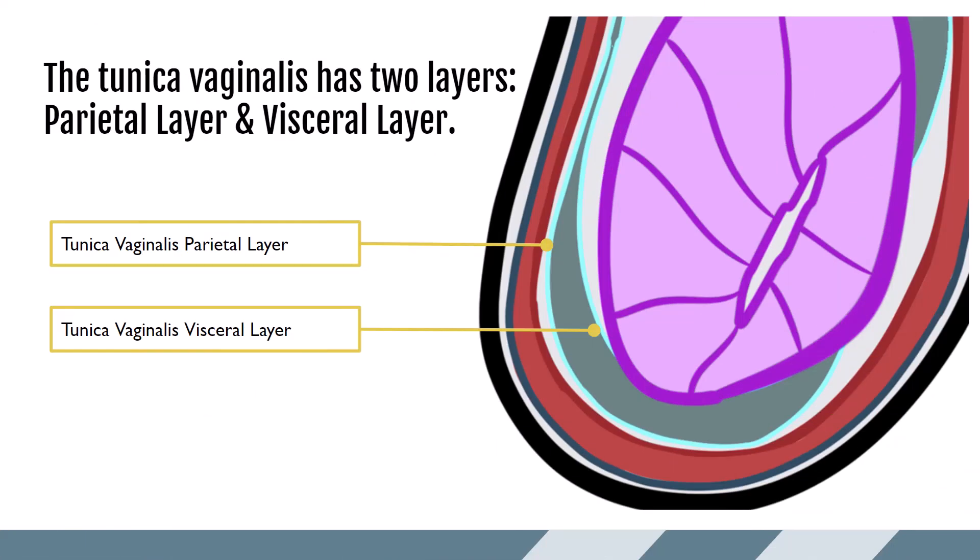Like the peritoneum, the tunica vaginalis has two layers: the parietal layer, which is in contact with the rest of the scrotal wall, and the visceral layer, which is in contact with the testicle — the parietal on the wall side, and the visceral layer covering the viscera or organs, in this case the testicle. The tunica vaginalis does create a small amount of fluid that fills the space between the two layers. Remember this space, as it will lead to a very common pathology called a hydrocele.